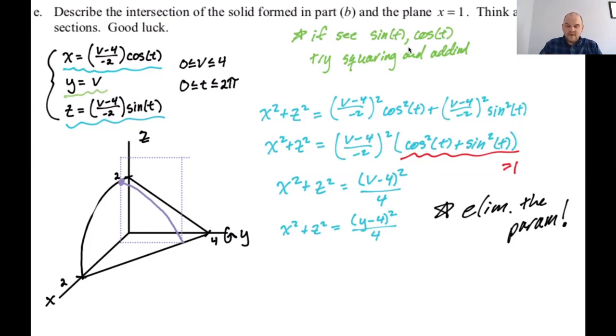So now let's do the actual problem. We were told that X is equal to one. So if X equals one, then I'm going to get one plus Z squared equals Y minus four squared over four. I wonder how long this video is. I feel like I'm going for a while here. So what is this? This is a hyperbola, right? So rearrange it and I'll get Y minus four squared over four minus Z squared equals one.